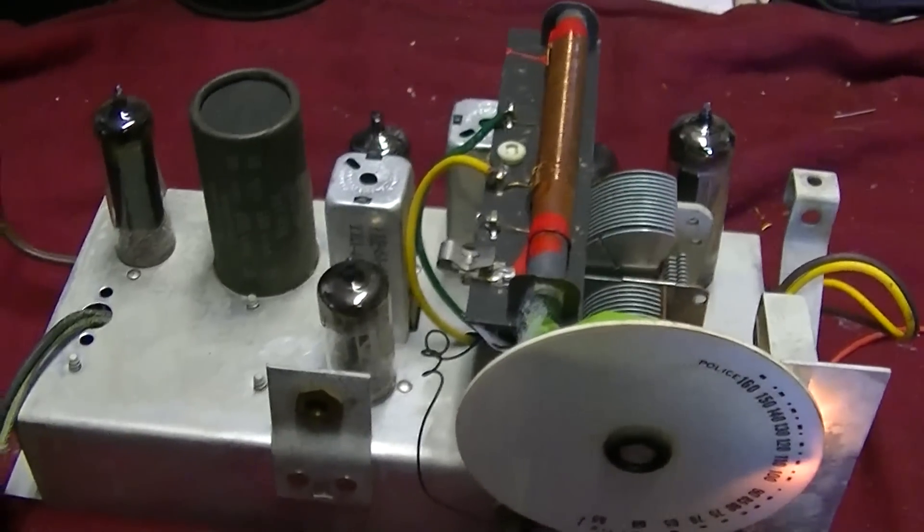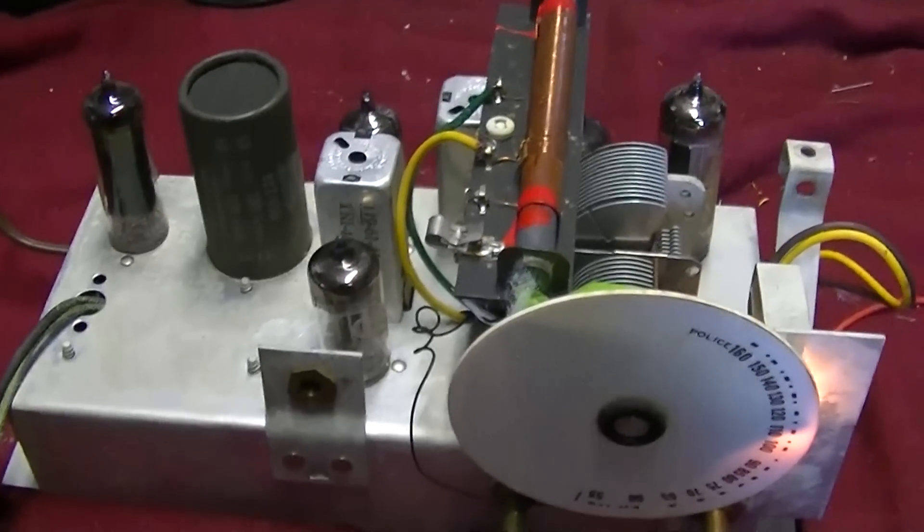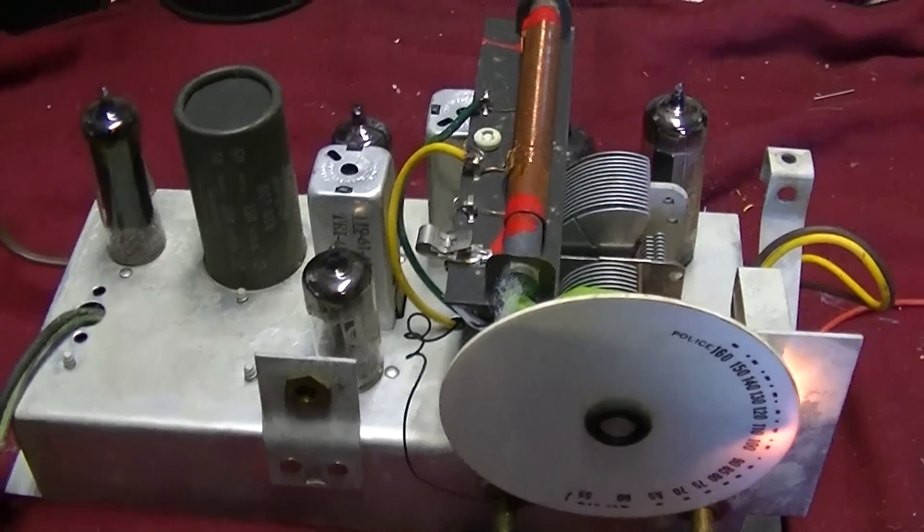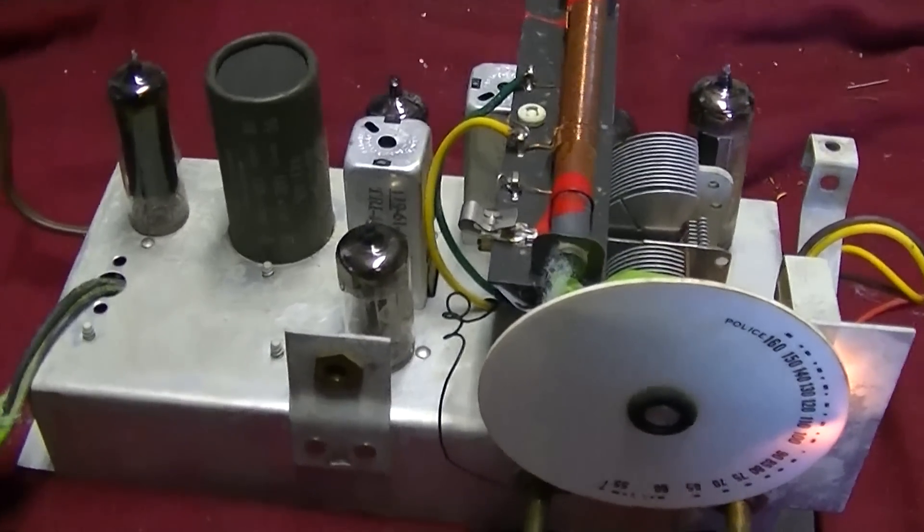Well, there you go. A simple all-American 5 that's in great shape. Recap, replace the electrolytics, get the old ones out of the circuit and put new ones in. Real easy. And we'll see you again.